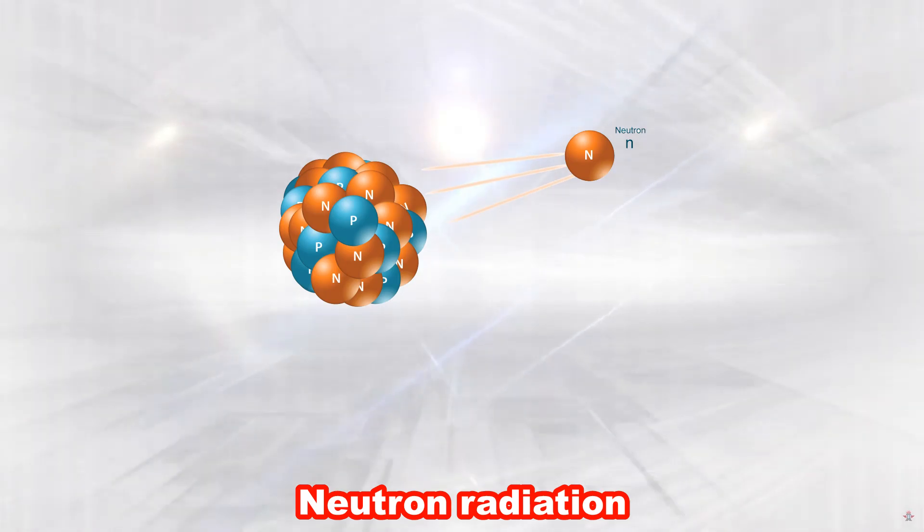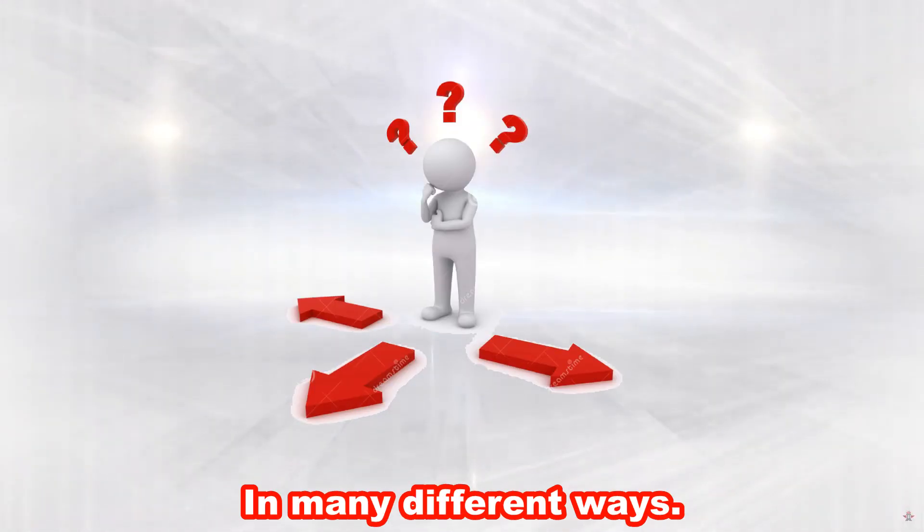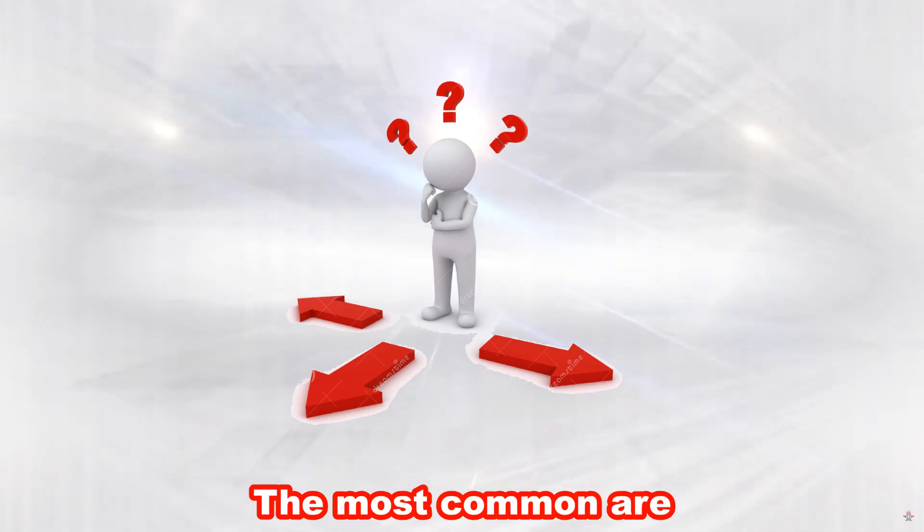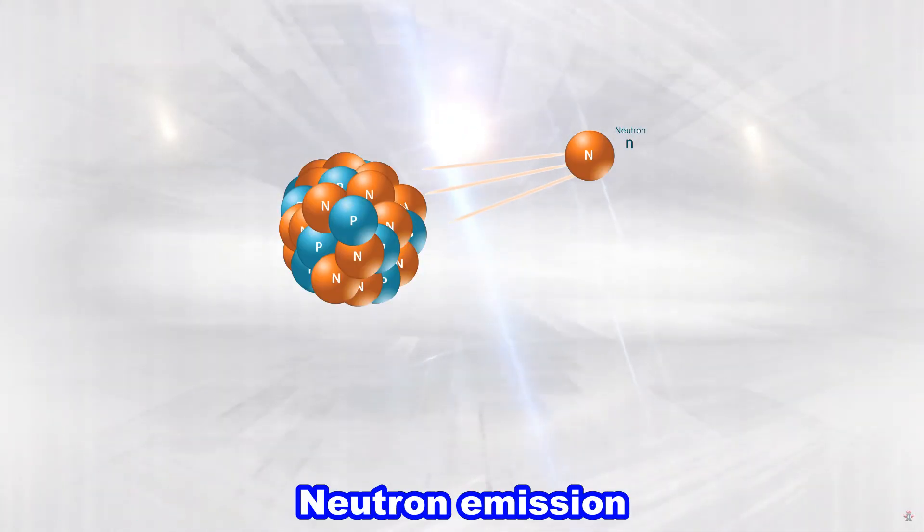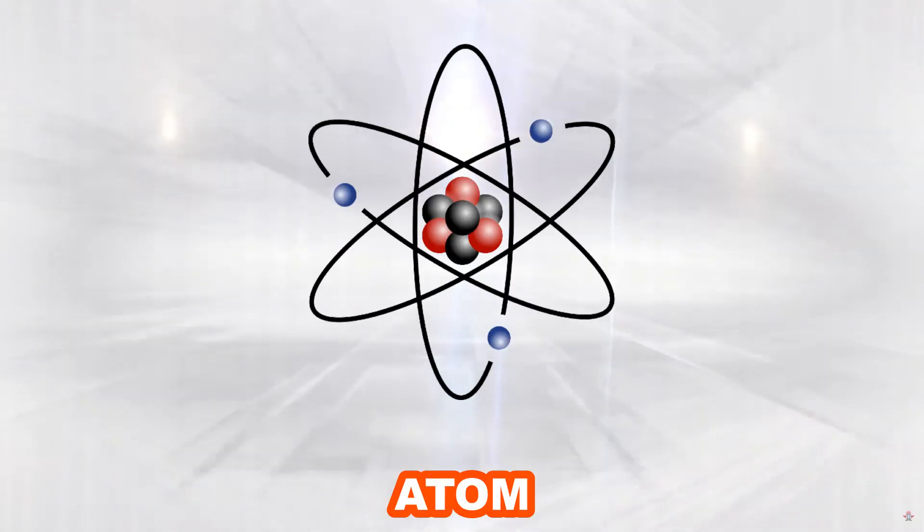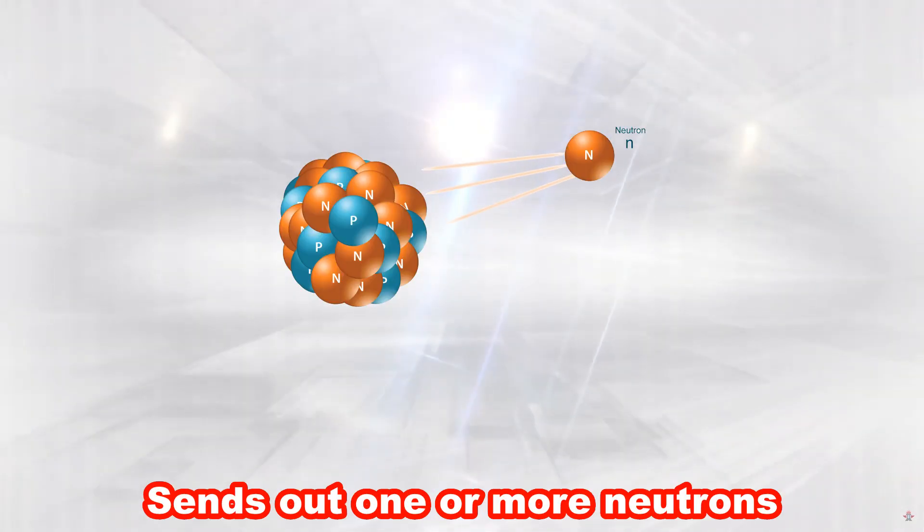Neutron radiation. Neutron radiation can happen in many different ways. The most common are nuclear fission, nuclear fusion or neutron emission. Neutron emission is when an atom sends out one or more neutrons from its nuclei.